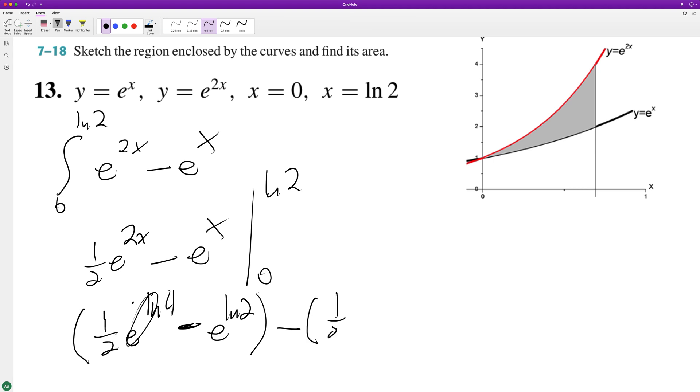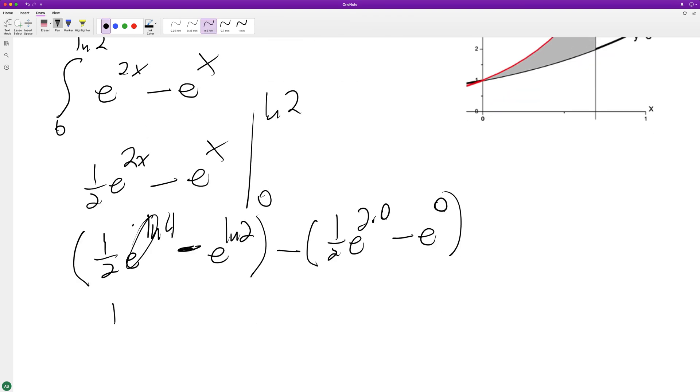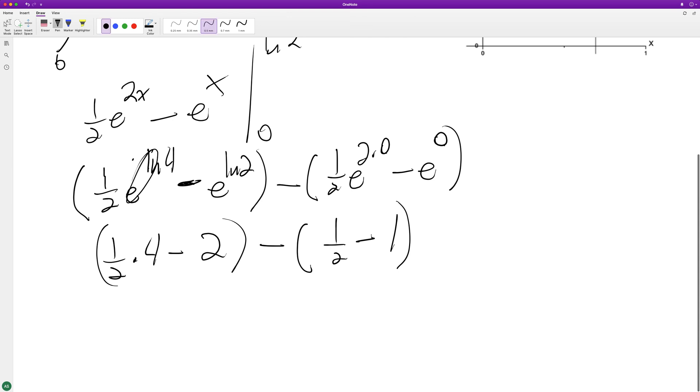What we end up with here is one-half times 4 minus 2, minus anything raised to 0 is 1, so one-half minus 1. Here we get 2 minus 2, so this is 0, and this is minus negative one-half, which becomes one-half.